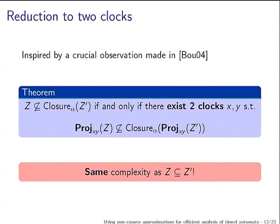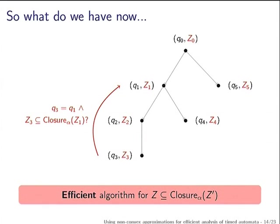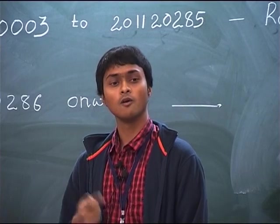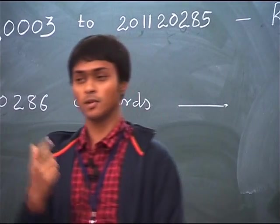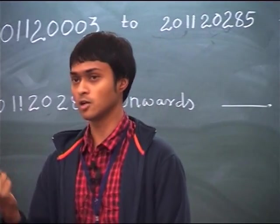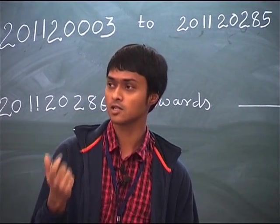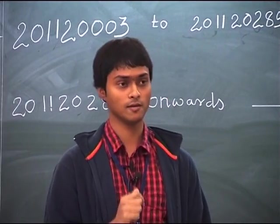The number of projections is just O(n²) where n is the number of clocks, so the complexity of this algorithm is quadratic in the number of clocks — the same complexity as checking if a zone is included in another zone. Checking if Z is contained in the closure of Z' is as cheap as checking if Z is included in Z'.